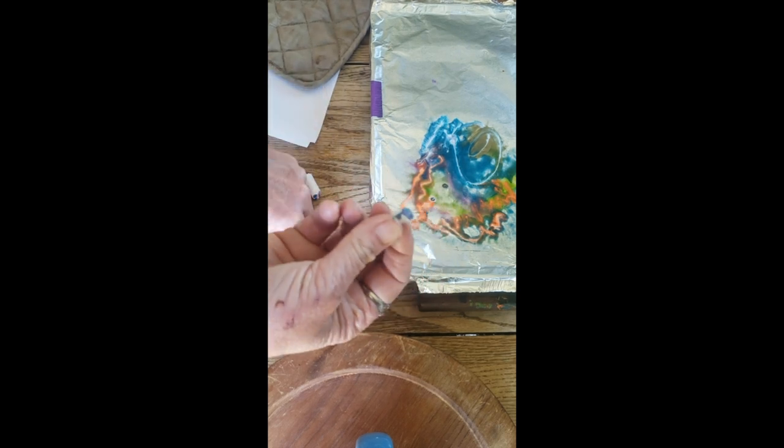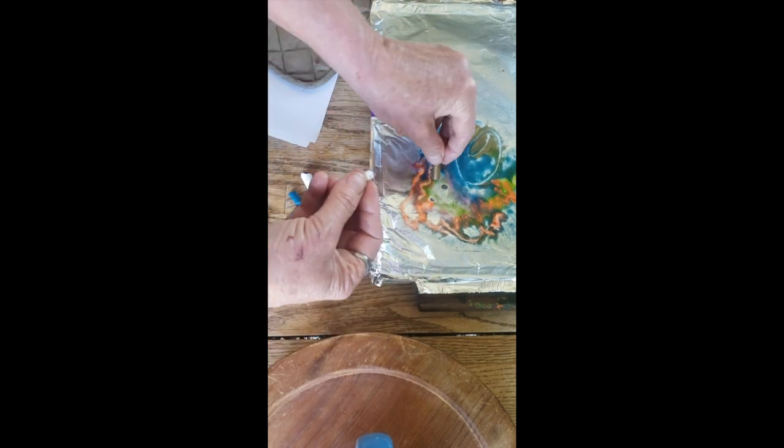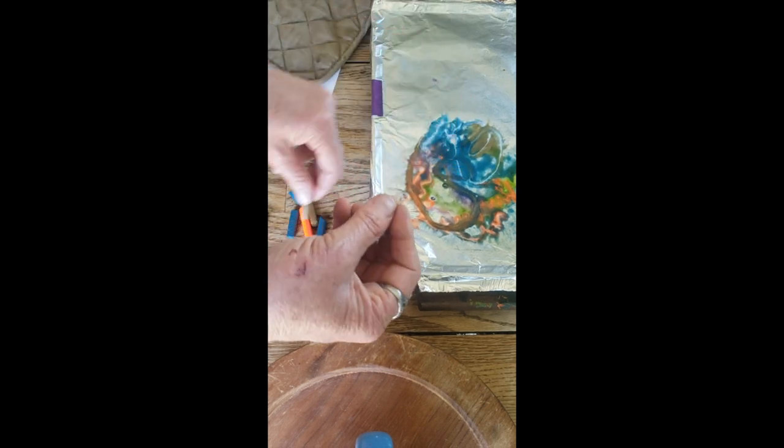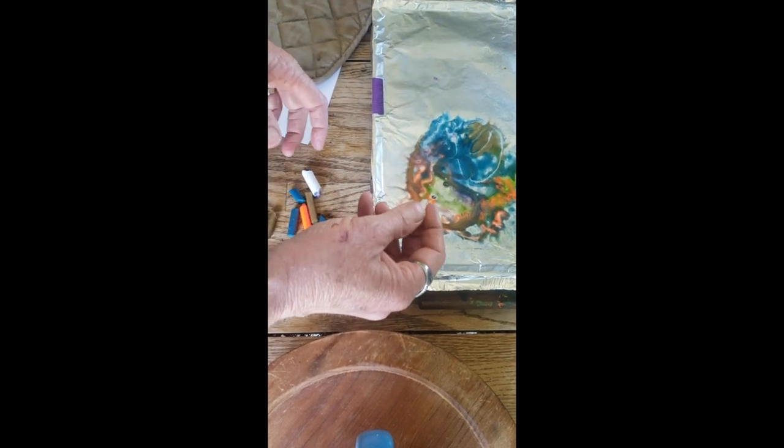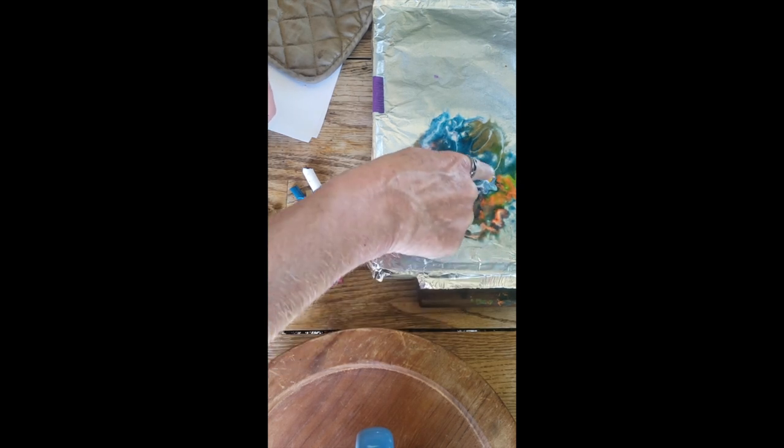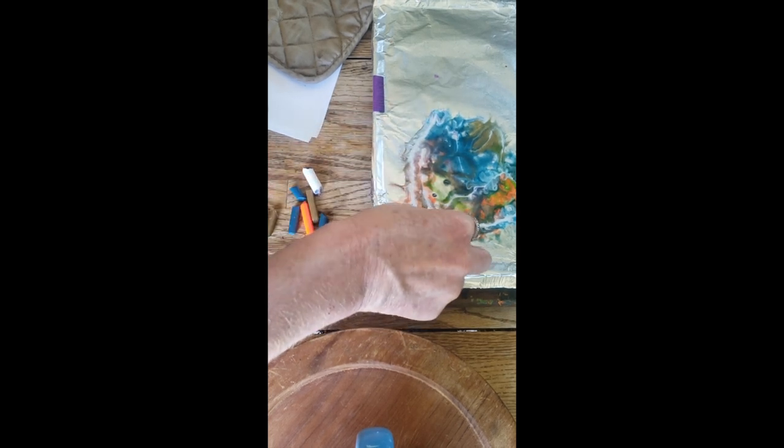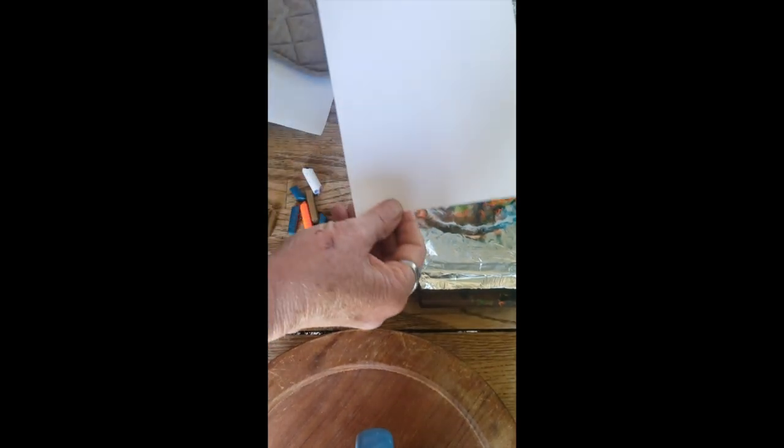Some of the colors that stand out might be some of the metallics if you have any. This one's a gold one. I love using silver. White is really fun to use because it will mix with the colors and really show up. When I'm done with the design, I'm going to actually print it.